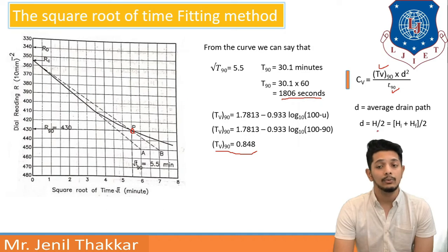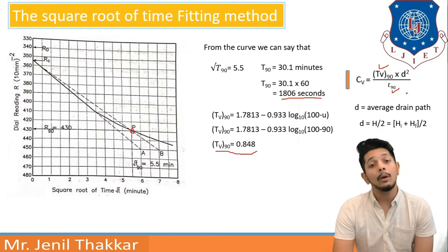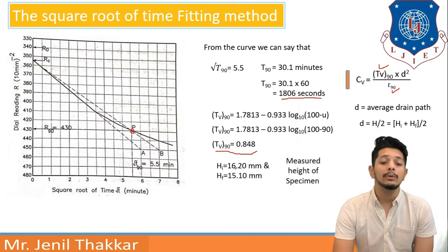Now d is equal to h by 2 or we can say h initial plus h final by 2. Now h initial and h final from experimental value we have to take h i as 16.20 and h f as 15.10 mm.